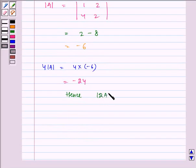Hence, |2A| is equal to 4 times |A|. That is, determinant of 2A is equal to 4 times determinant of A. Hence proved.